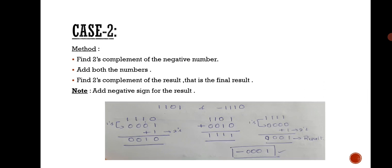Case two: when a positive number is added with a negative number where the negative number has greater magnitude. The method is: first find the two's complement of the negative number, then add both numbers. After adding, find the two's complement of the result you obtain — that is the final result. Since the magnitude of the negative number is higher, the answer will be negative. This example shows taking the two's complement of the negative number, adding it with the positive number, then taking the two's complement of the resultant to get the final answer.